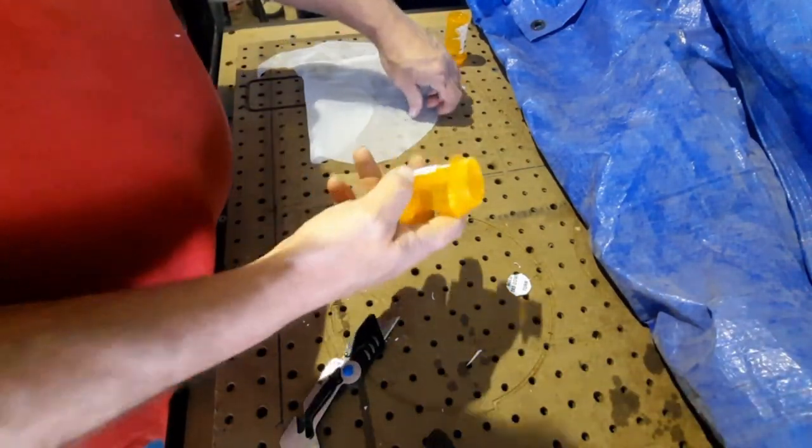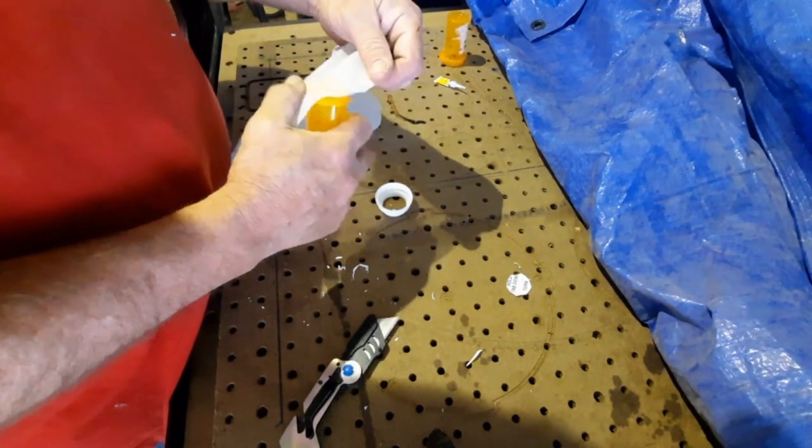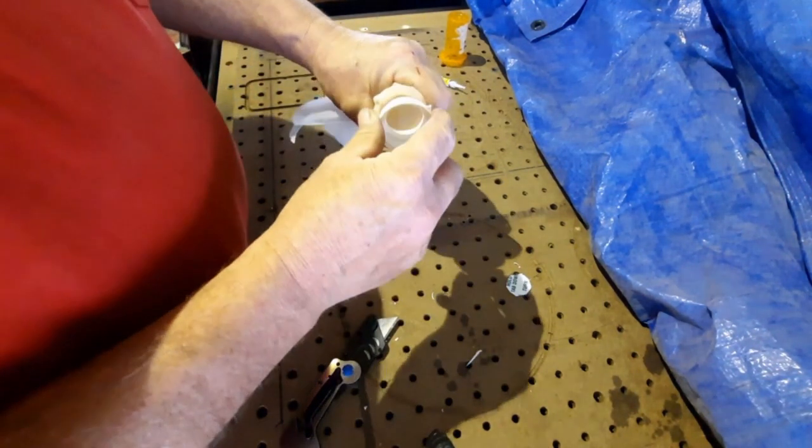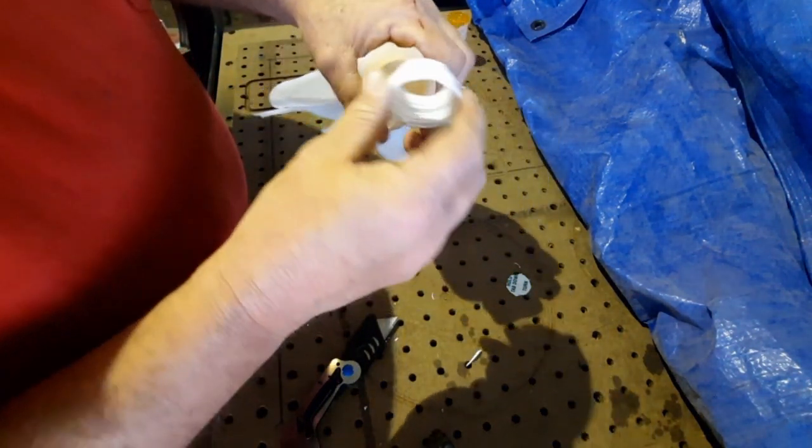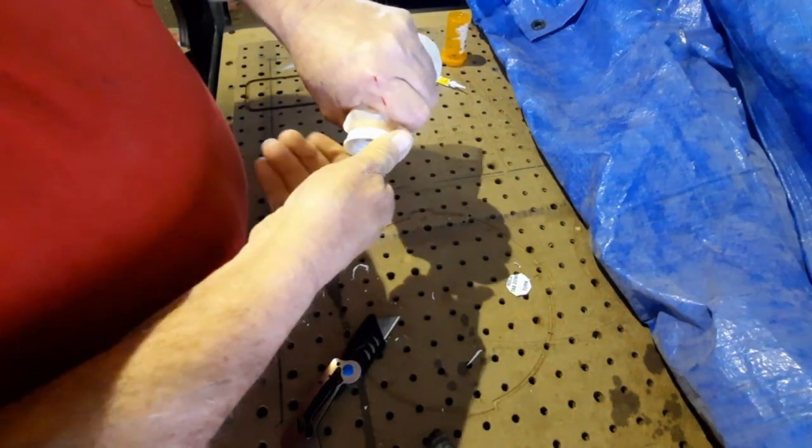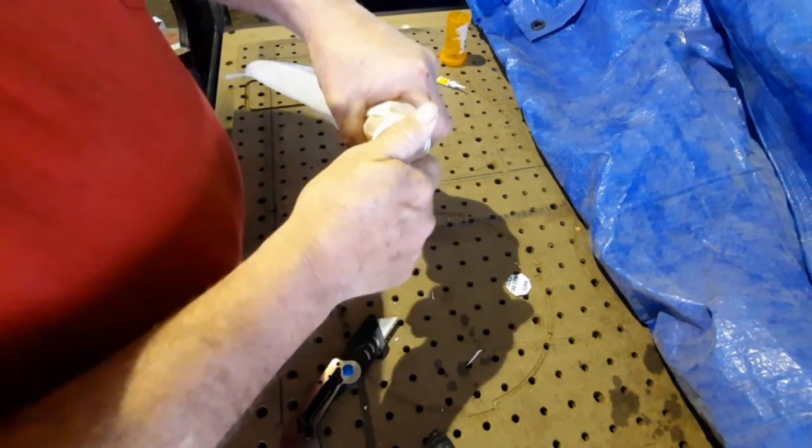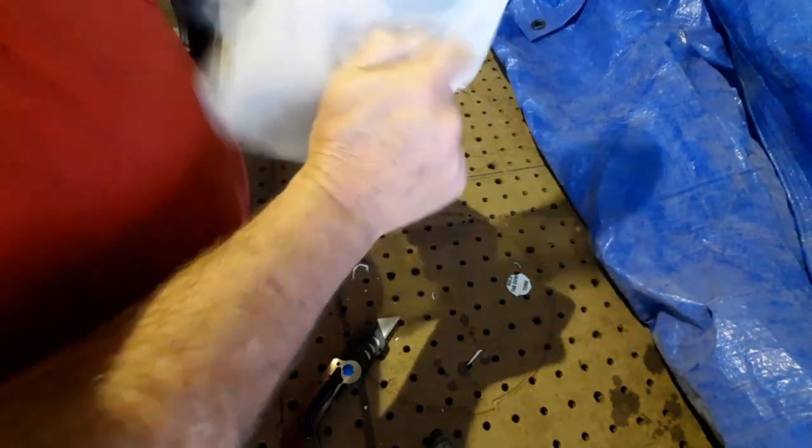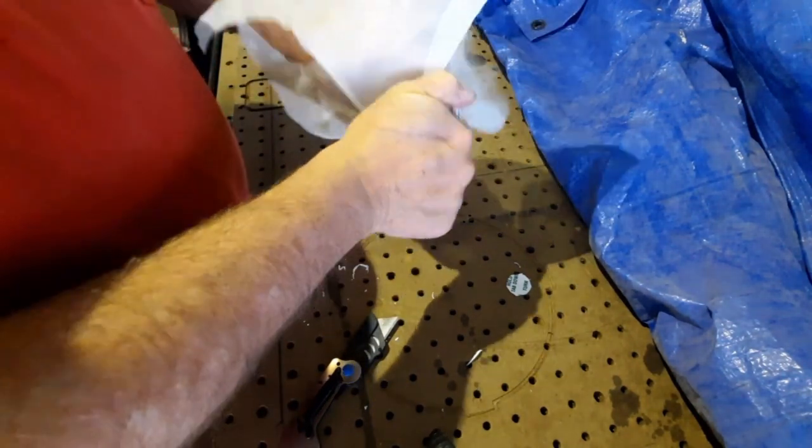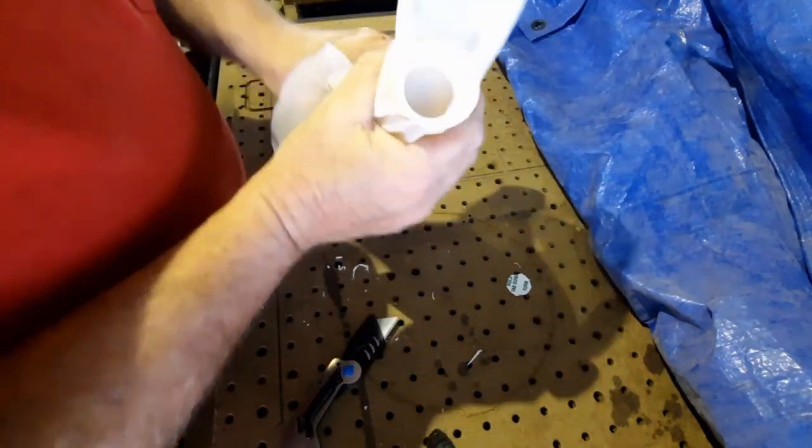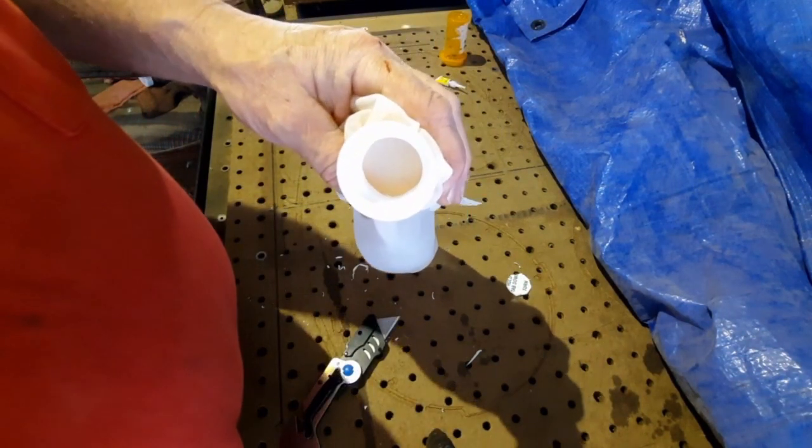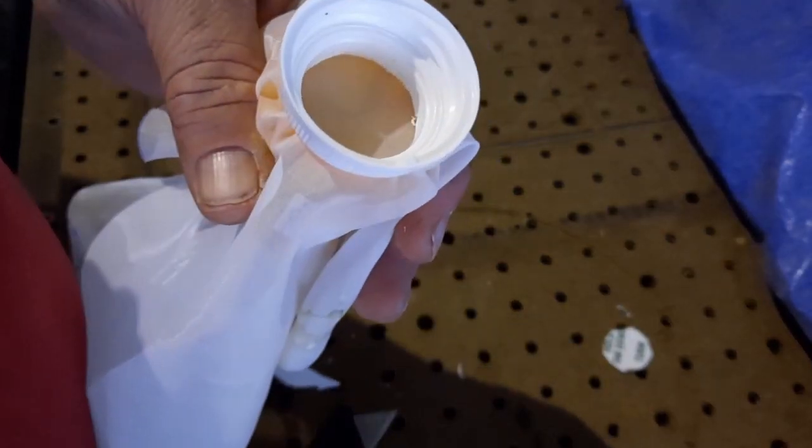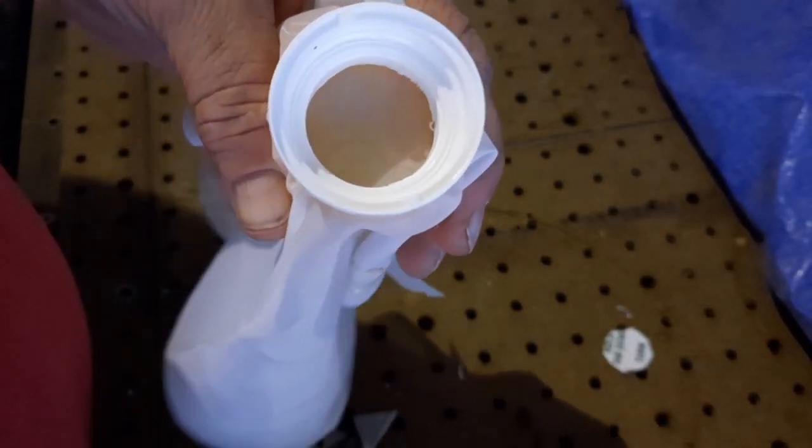Now all we got to do is put the screen over the pill bottle, put the lid down on there and stir it down inside the pill bottle. And there you can see the screen's in there, it's nice and flat and tight.